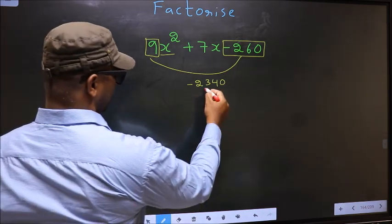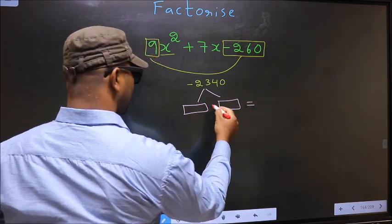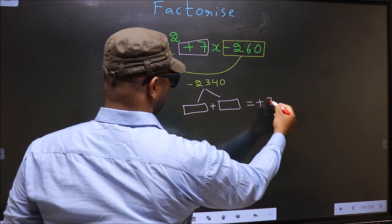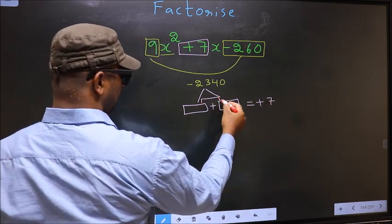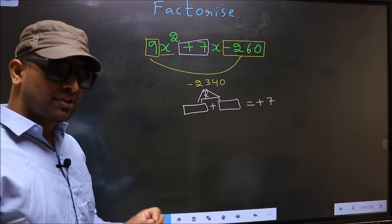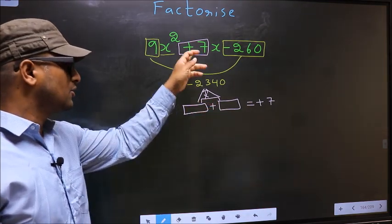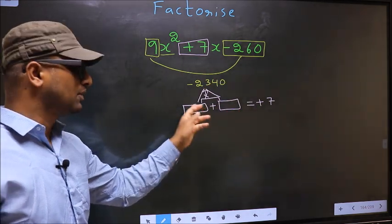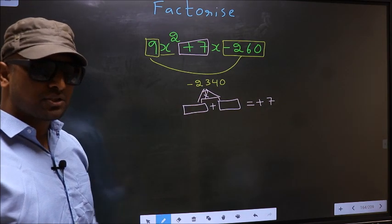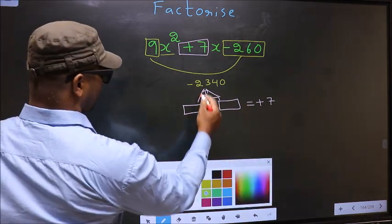Next, now you should look out for two numbers such that when you add these two numbers, you should get middle coefficient plus 7, and also when multiplied, you should get minus 2340. To get those two numbers, we should take LCM of 2340.